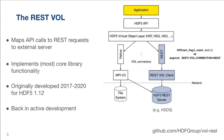In particular, the REST VOL connector takes those external API functions and turns them into REST requests, which get sent to some external server that implements the HDF5 REST API — usually HSDS, but you could also write your own server. The REST VOL implements most of the core library's functionality. Whatever operations you want to do with datasets, groups, attributes, iterations, filters, or fill values, odds are that the REST VOL and HSDS support that.